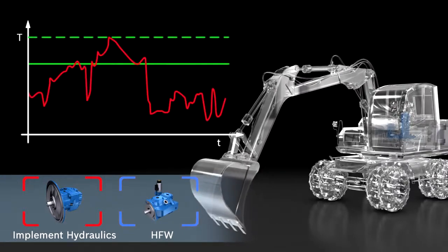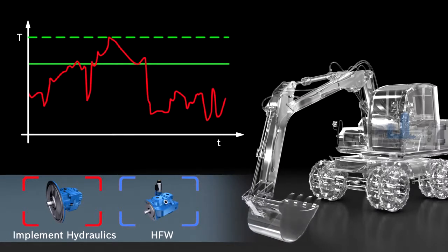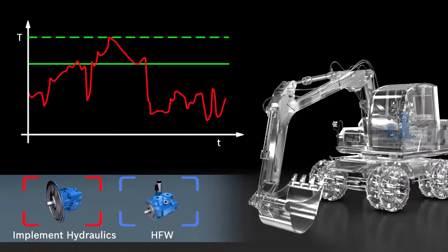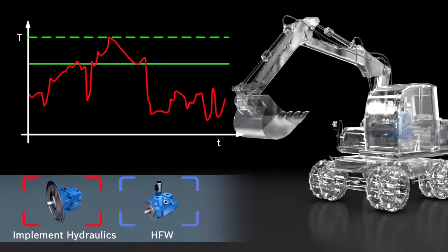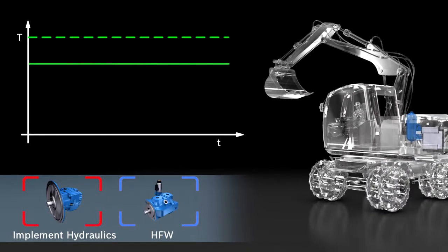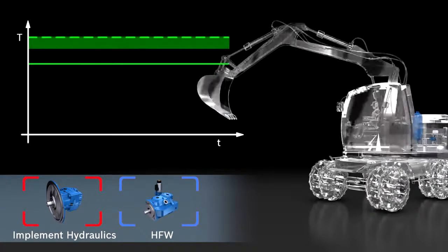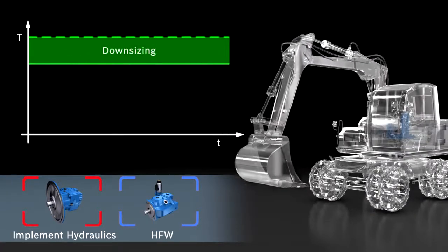In a conventionally designed combustion engine, the rated torque is selected on the basis that it can deal with the power peaks, depicted here as a broken line. Using an HFW system eliminates these performance peaks, so that a smaller rated torque is sufficient. This opens up the possibility of downsizing.